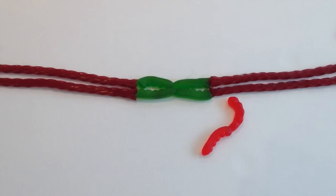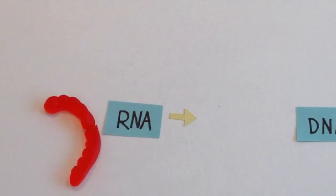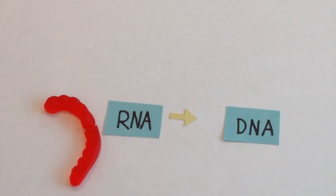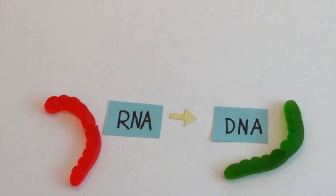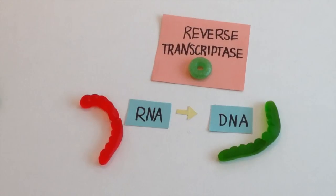But the problem is, if the retrotransposon is to be inserted into a new region of DNA, it can't be in RNA — it needs to be in DNA. So the RNA is reverse transcribed into DNA using reverse transcriptase.